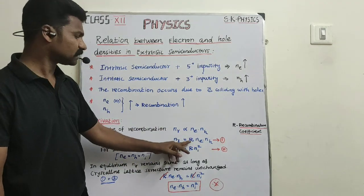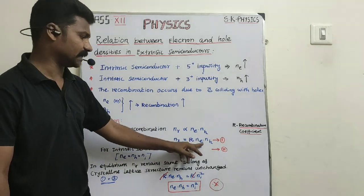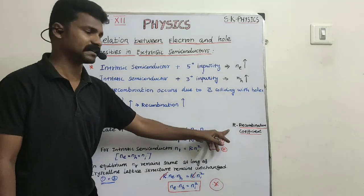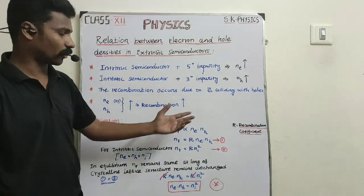Therefore, Nr equals a constant r times Ne into Nh. That constant has a special name - we call it the recombination coefficient.